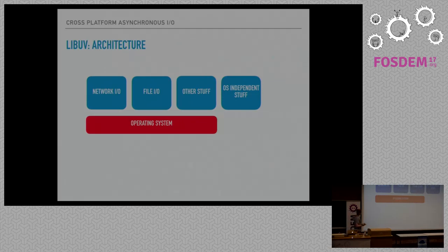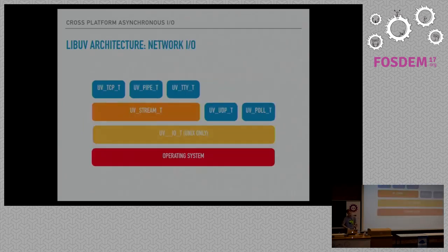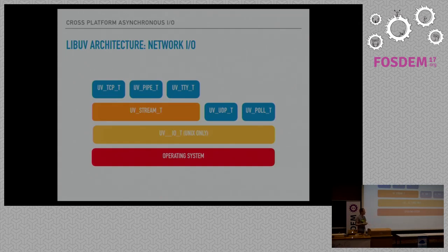Looking at a block diagram: we do network I/O, file system I/O, other stuff, and OS-independent utilities. For networking I/O, we have TCP, pipes, and TTYs which we abstract as streams — they have a certain API, they get read callbacks called, you can write to them, send file descriptors over them. UDP and poll handles also deal with network I/O or sockets but they are not streams. They are backed by an internal layer that abstracts I/O polling across different Unix operating systems. On Windows we don't have this because Windows works differently, but on Unix this layer lets every Unix system sit on top and be implemented easily.